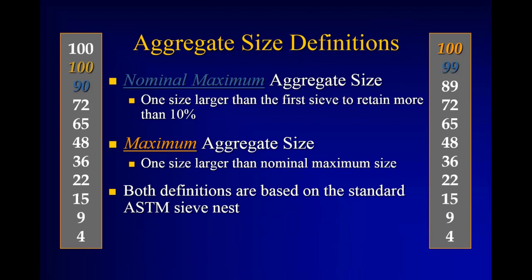An important definition: Superpave established a common definition across the country for maximum and nominal maximum aggregate size. The nominal maximum aggregate size is the first sieve one size larger than the sieve that retains more than 10%. Looking at the gradation on the left, this sieve is the first to retain more than 10% — in this case 28% — and therefore the blue sieve is the nominal maximum, and by definition the maximum is one sieve size larger.